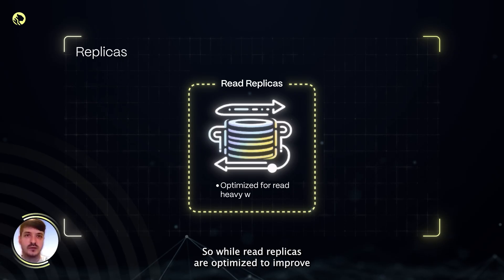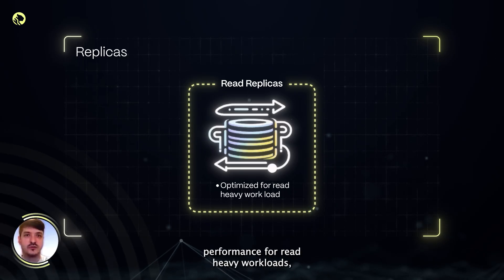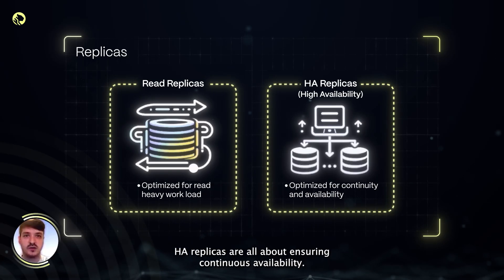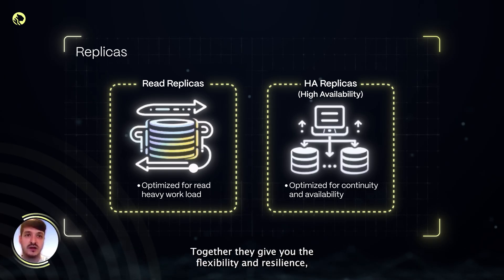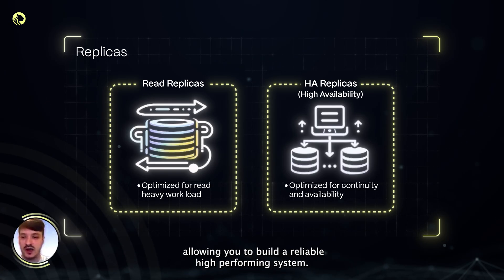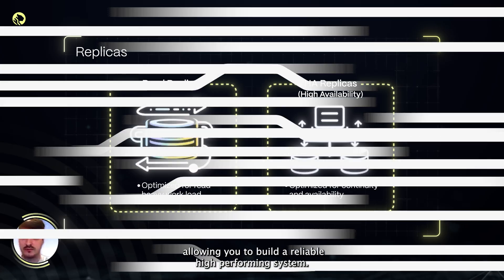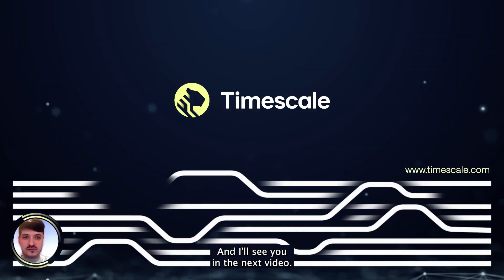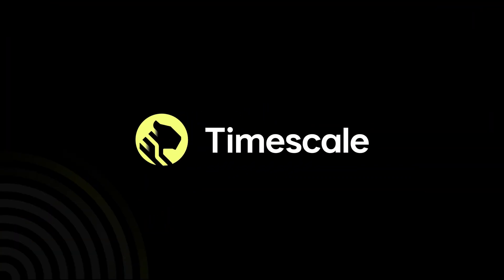So, while read replicas are optimized to improve performance for read-heavy workloads, HA replicas are all about ensuring continuous availability. Together, they give you the flexibility and resilience, allowing you to build a reliable, high-performing system. Thanks so much for listening, and I'll see you in the next video.